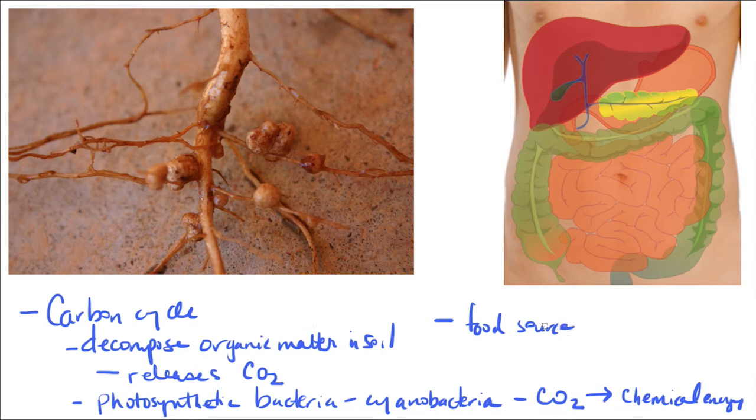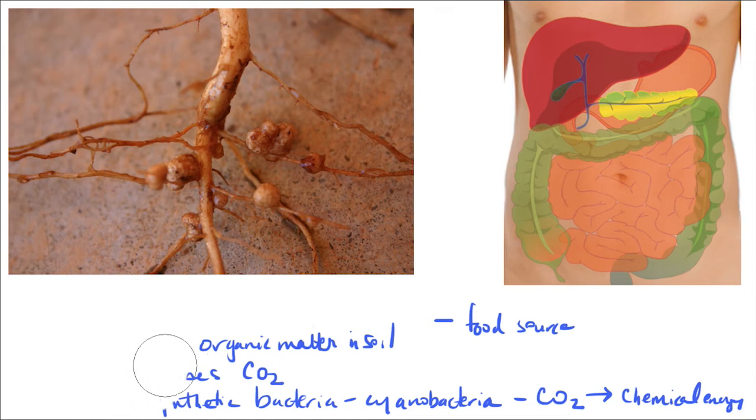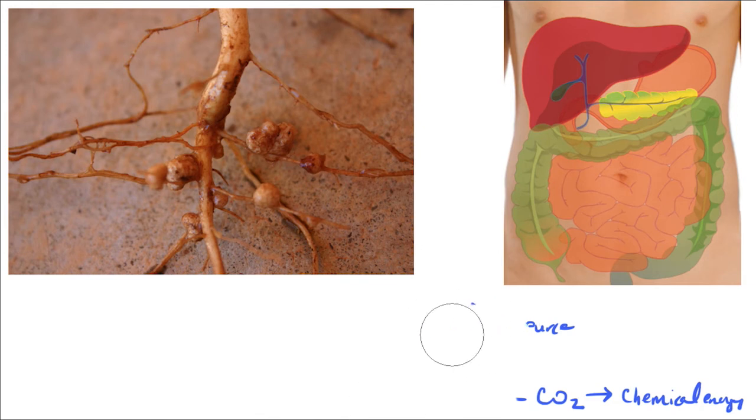In addition to that, bacteria serve essentially as a food source for many organisms in food chains. That's just one way that microbes are important. You see here some plant roots, and you'll notice that on these plant roots there are some nodules that are protruding that are pretty obvious.